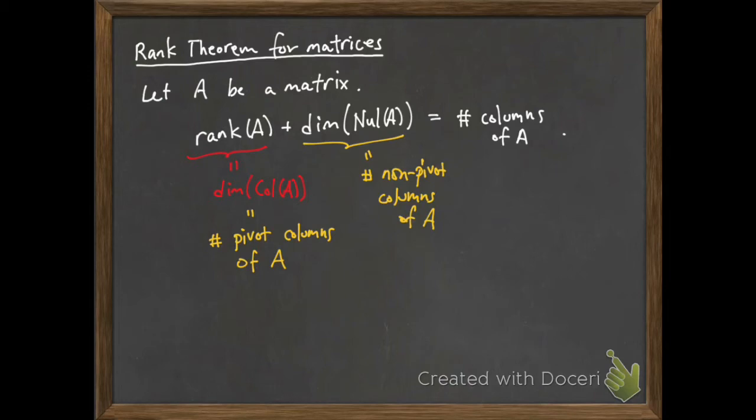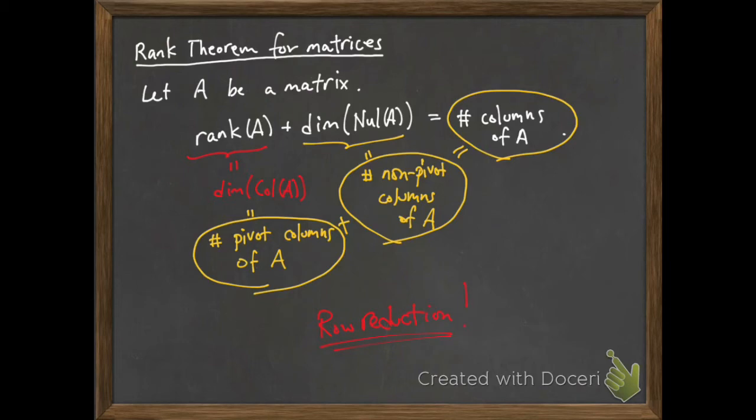And so you see that if you take the number of pivot columns and add it to the number of non-pivot columns, then you get the number of columns of A. So again, we're seeing row reduction, even though we're not doing it explicitly on the matrix, gives us a theoretical tool for understanding these objects.